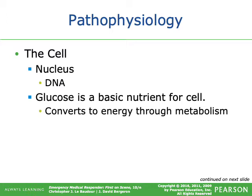The nucleus of the cell is basically the brain or control center of the cell. Glucose is a basic nutrient for the cell — it's converted to energy through metabolism. You have aerobic and anaerobic metabolism, just for a little preview.